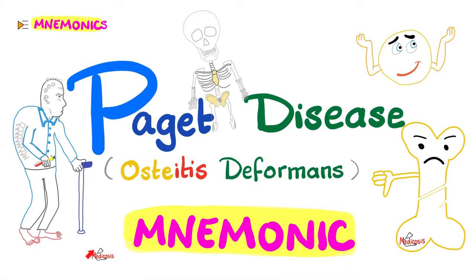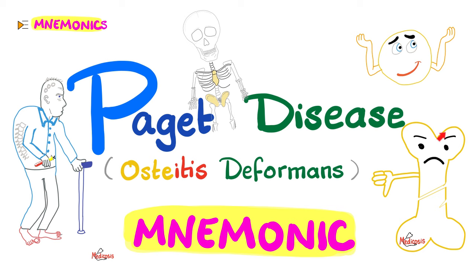Welcome to Medicosis Perfectionatus, where medicine makes perfect sense. Continuing our mnemonics playlist, today we have a great mnemonic about Paget's disease, also known as ostitis deformans. 'Itis' means inflammation, 'oste' means bone, 'deformans' means deformity. It's a story of pathological bones increasing the risk of pathological bone fractures and deformity.